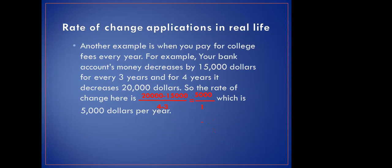Another example is used for banks and costs. For example, in your bank account, your money decreases by $15,000 for three years because college takes it, and for four years it decreases $20,000. So you want to know the rate of change, how much it decreases each year. You get the difference between the cost, $20,000 minus $15,000, over the time or years, which is four minus three, which should be $5,000 a year.